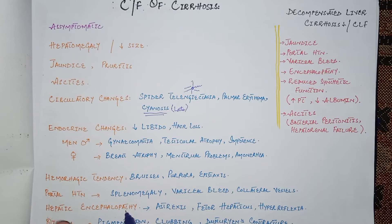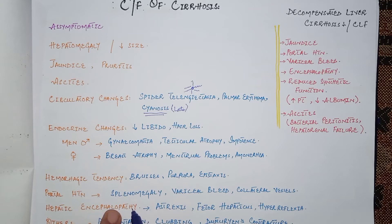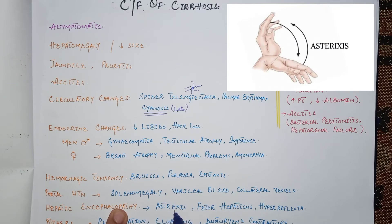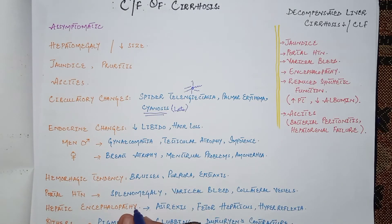Portosystemic shunting also occurs in cirrhosis. Hepatic encephalopathy — more prominent in acute liver failure but present in cirrhosis as well — occurs because of hyperammonemia. Normally ammonia is converted to urea in the liver, but impaired liver function causes high blood ammonia levels, resulting in asterixis (flapping tremors of the hands), fetor hepaticus (rotten egg smell from the breath due to mercaptan accumulation), and hyperreflexia.